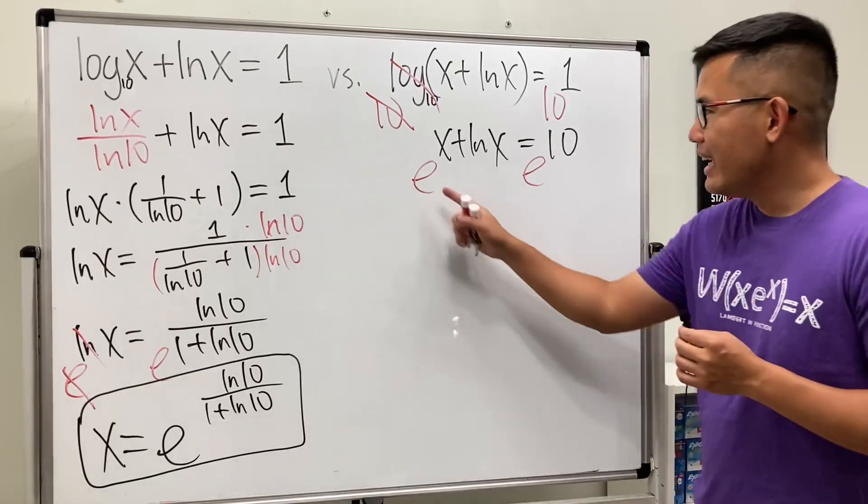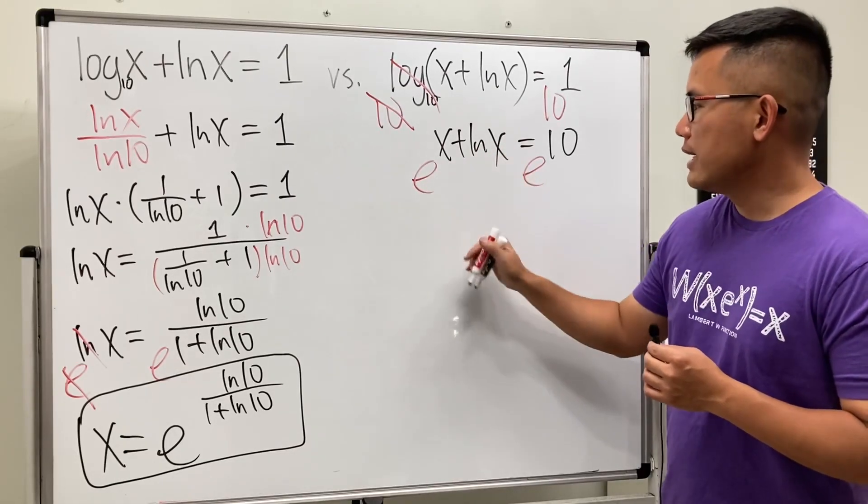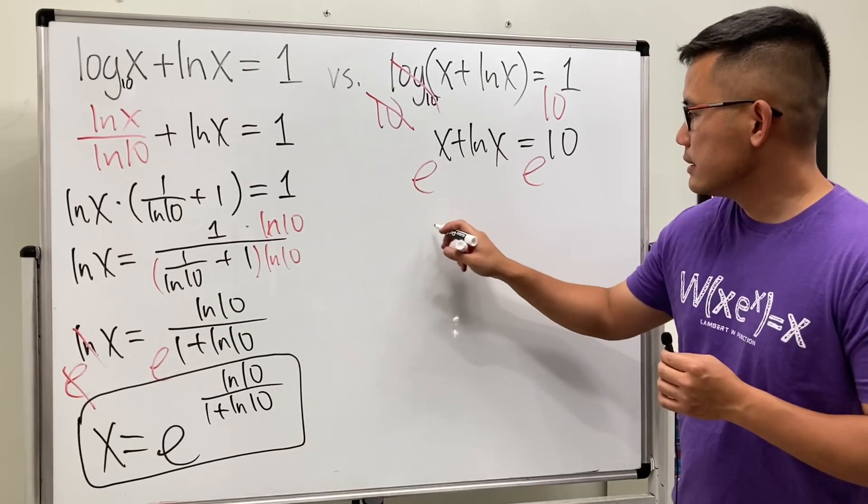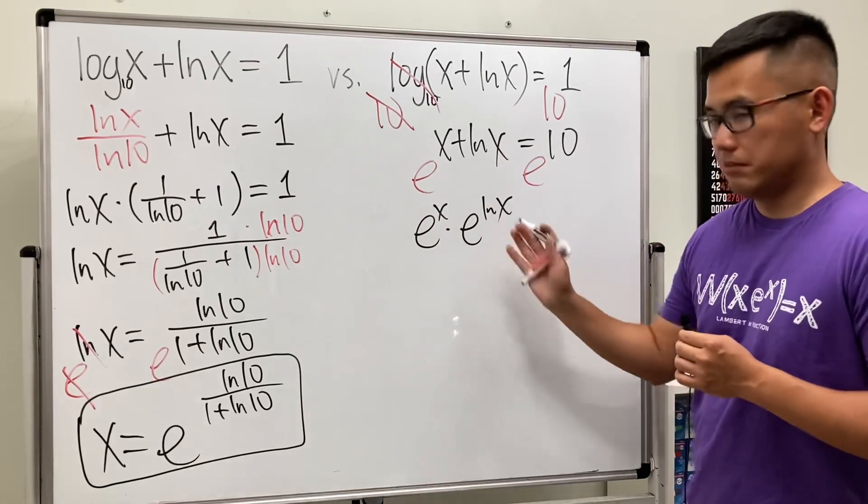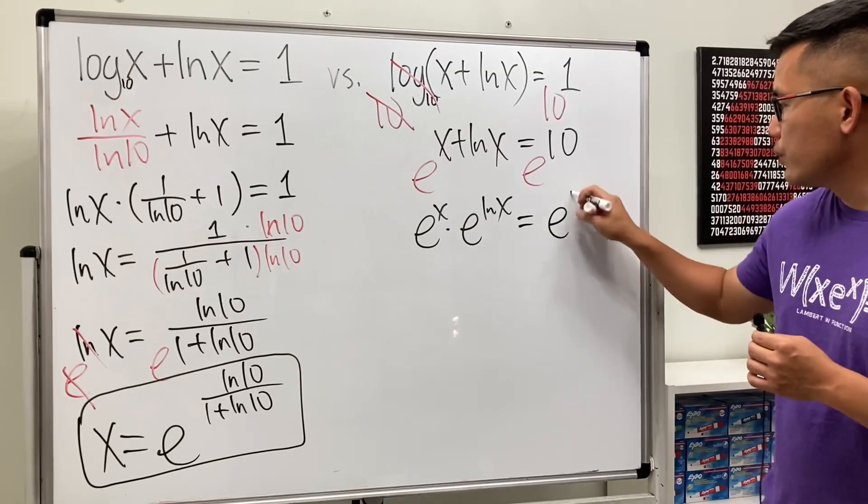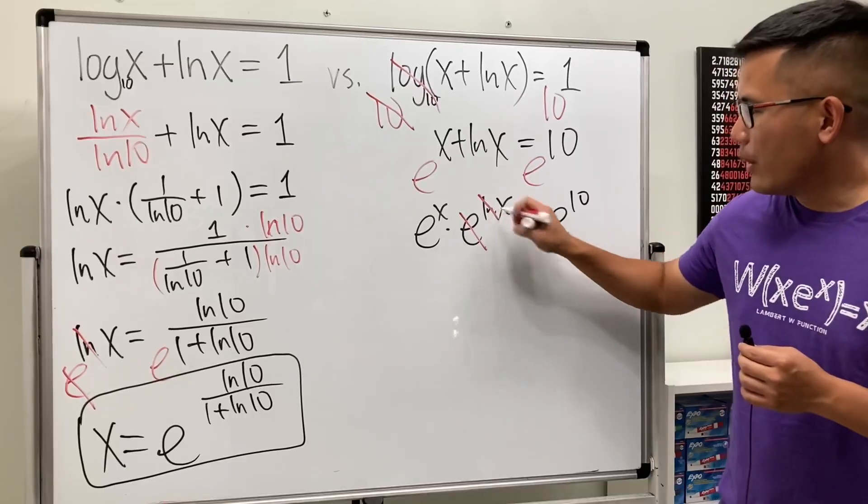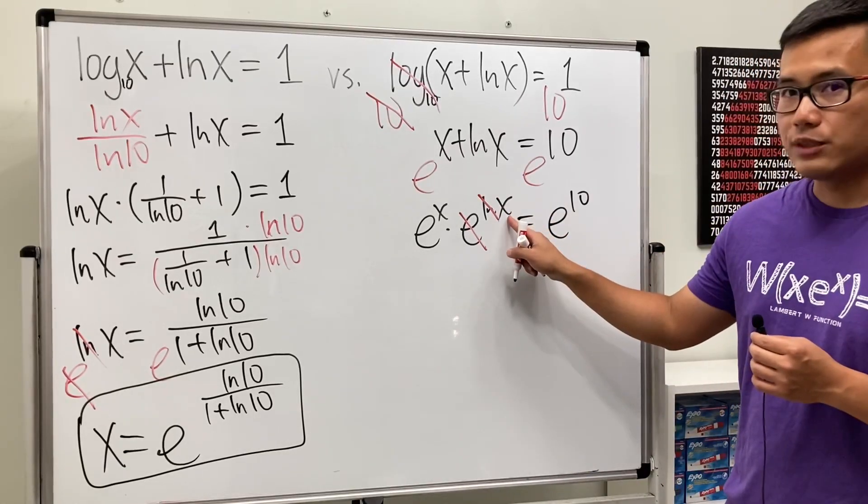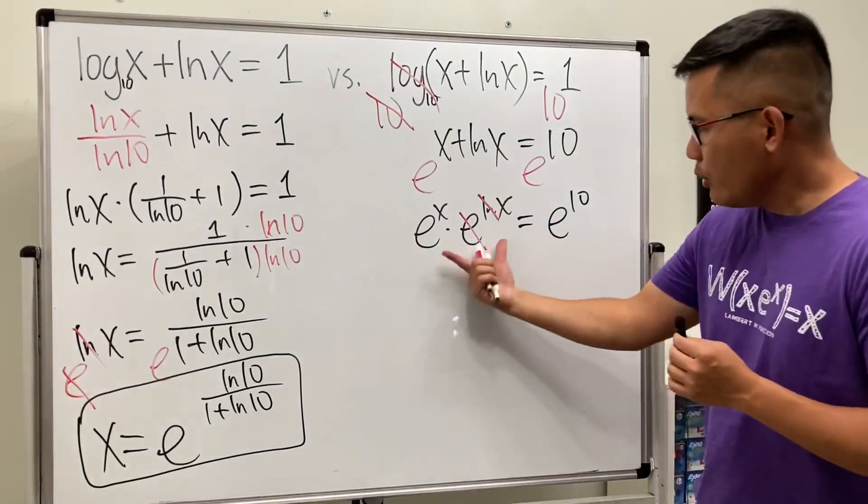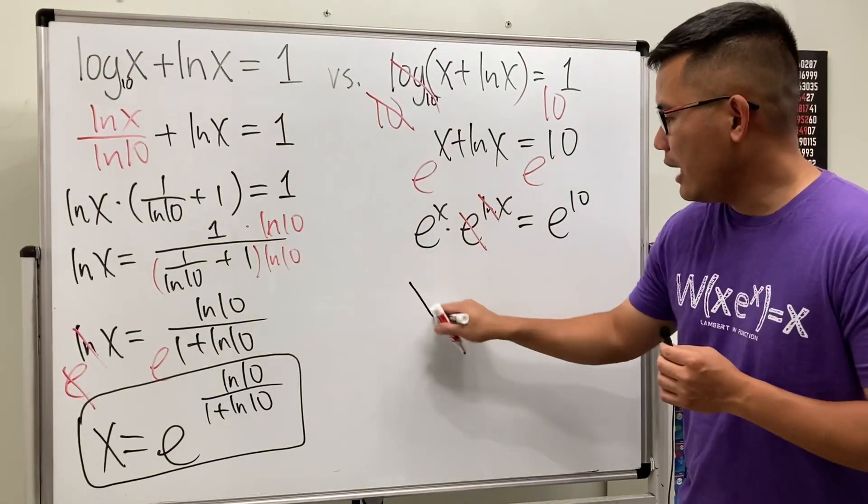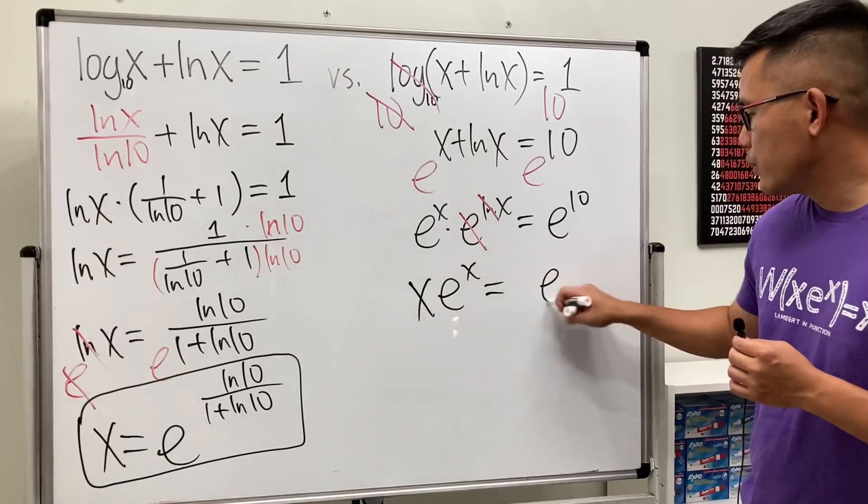Check this out. This part, because we have x plus ln x, we can rewrite this as e to the x times e to the ln x. And this is equal to e to the 10. Better yet, this e and this ln cancel. So, we just have this x right here. And let's put the x to the front, just like this. So, all in all, this right here is just x times e to the x, and that's equal to e to the 10th power.